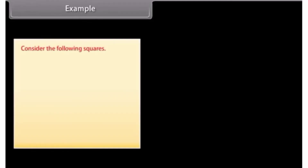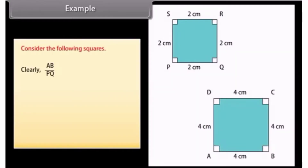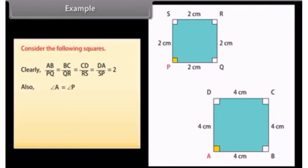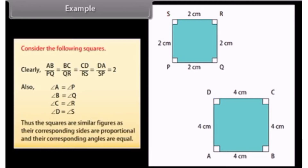Example: Consider the following squares. Clearly, AB/PQ = BC/QR = CD/RS = DA/SP = 2. Also, angle A = angle P, angle B = angle Q, angle C = angle R, angle D = angle S. Thus, the squares are similar figures as their corresponding sides are proportional and their corresponding angles are equal.